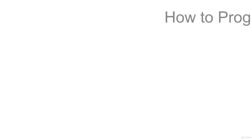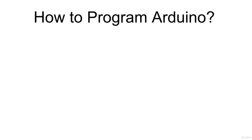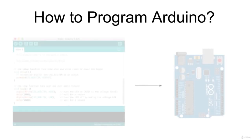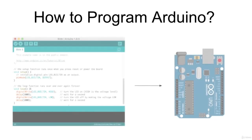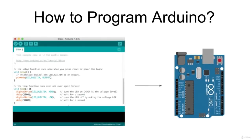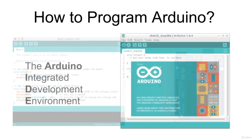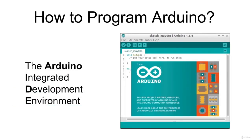In order to tell your board what to do and how to read inputs and control outputs, you need to send a set of instructions to the microcontroller on the board. This collection of commands is what is known as a program or Arduino sketch. To fulfill this task, you need to learn how to use the Arduino programming language and the main Arduino programming environment, known as the Arduino IDE.